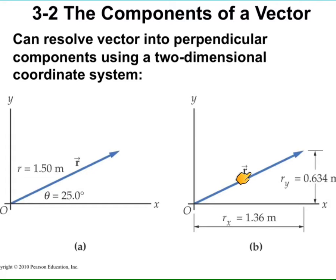In the Cartesian representation, we deal with the components of the vector in the x and y directions. Of course, if you're describing a vector in three dimensions, there is also a z direction. But for simplicity, we will only deal with two dimensions in this chapter — three dimensions is just a generalization.